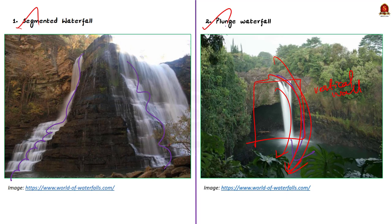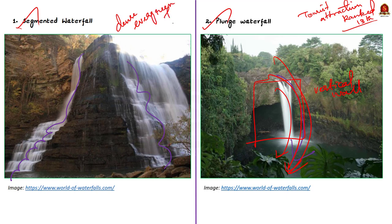Jog Falls is a major tourist attraction ranked 13th in the world by the Waterfall Database. During monsoons, one can see a breathtaking view with rainbows. It is situated in dense evergreen forest with abundant vegetation. The falls are formed by the Sharavathi River, which originates at Ambutirtha in Tirthahalli Taluk and flows northwest toward the Western Ghats.